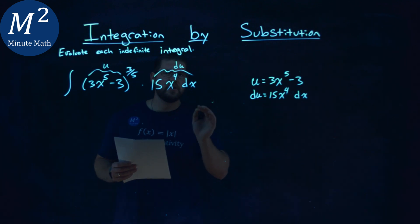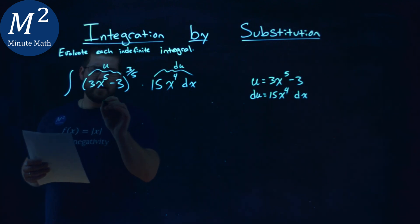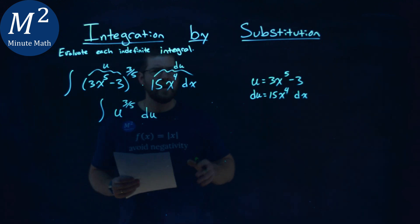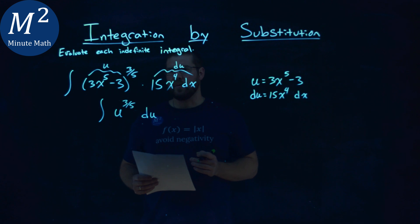So let's go rewrite this in terms of u. The integral now of u to the 35th power du. And again, that's a much easier integral to solve.